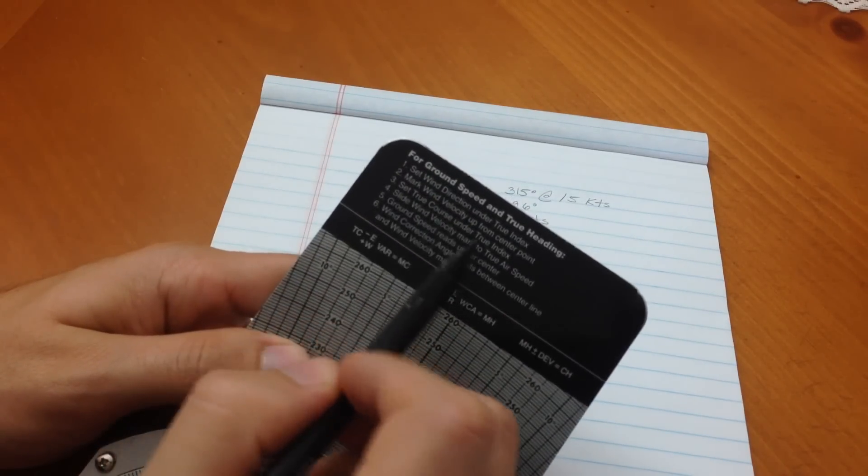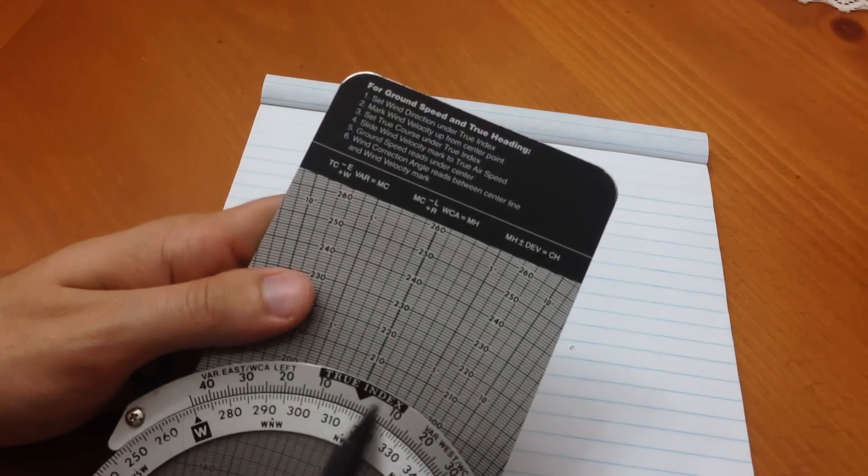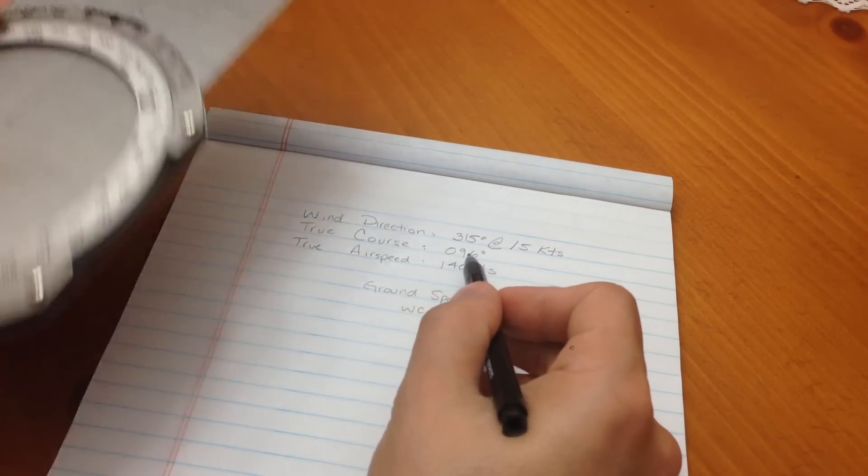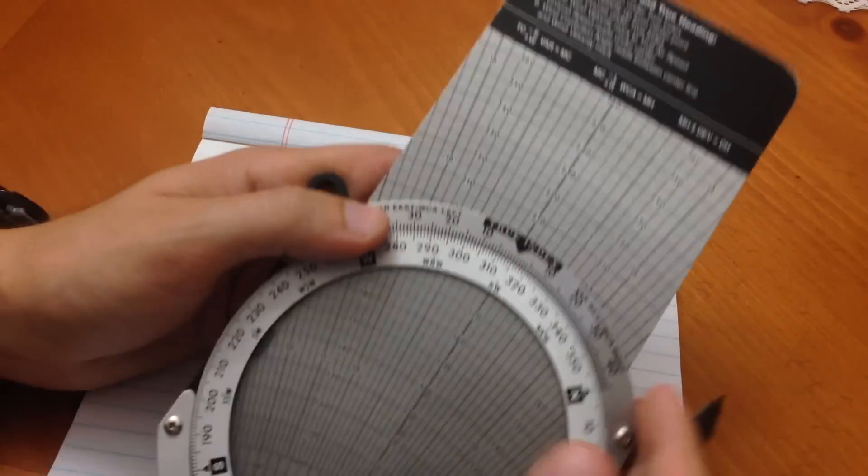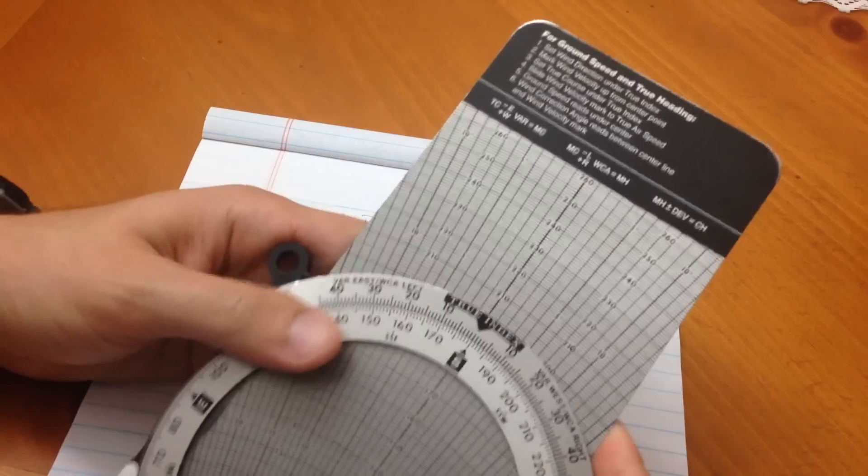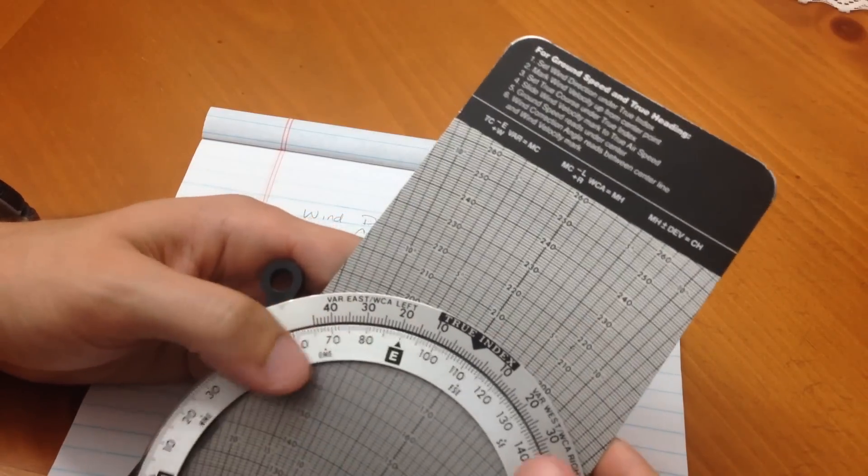Set our true course under true index. Again, we go back to true index, and we're going to go ahead and set course, which in this case is 096 degrees. So, we're going to rotate the wheel, 096 degrees. And I normally always go the long way, because I'm just lazy.